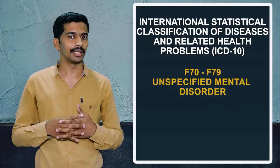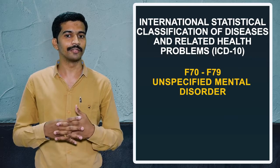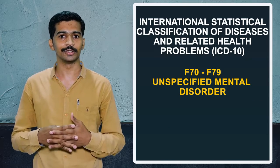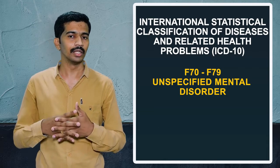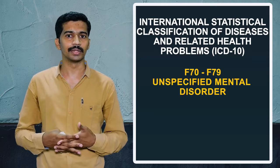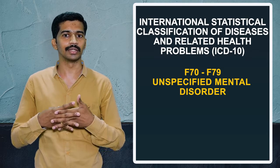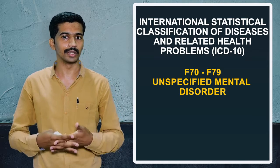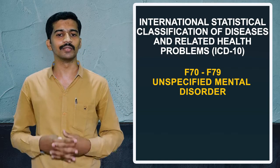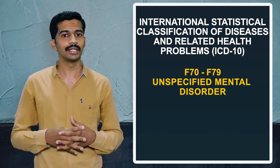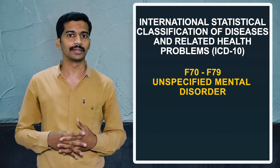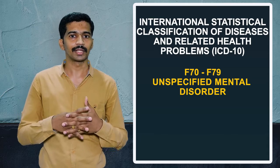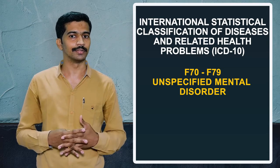The last chapter, F99, covers unspecified mental disorders. Any disorders not included in the above chapters will fall under this last chapter. That concludes the ICD classification.